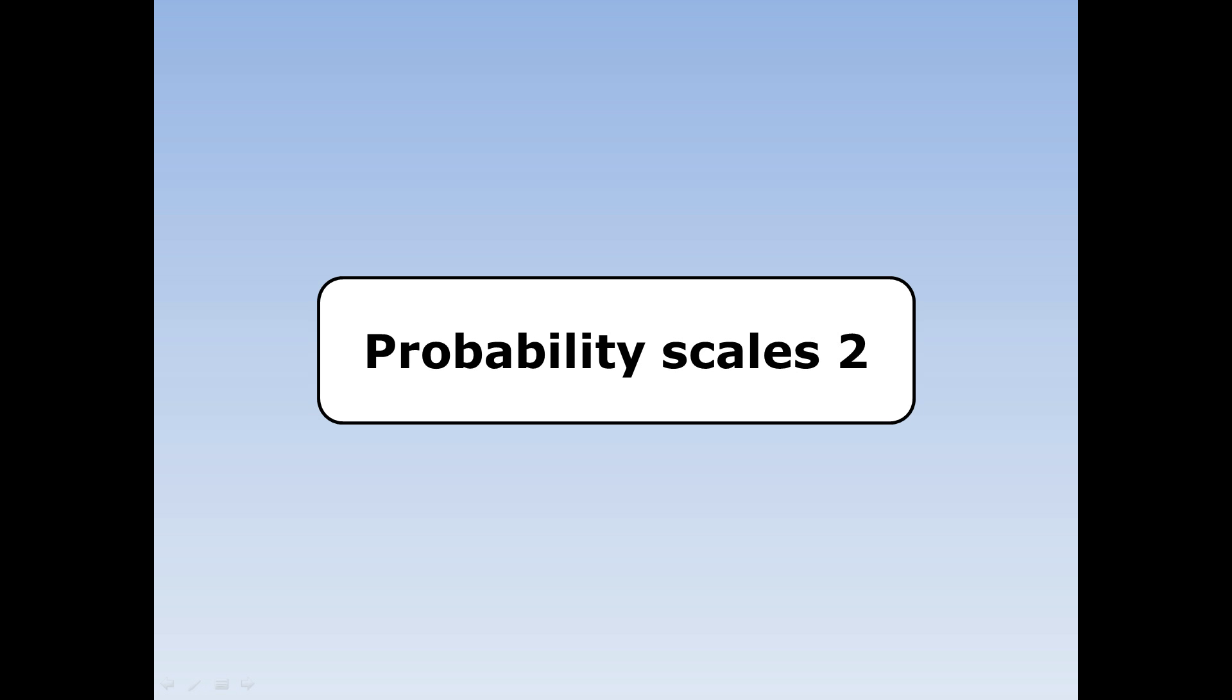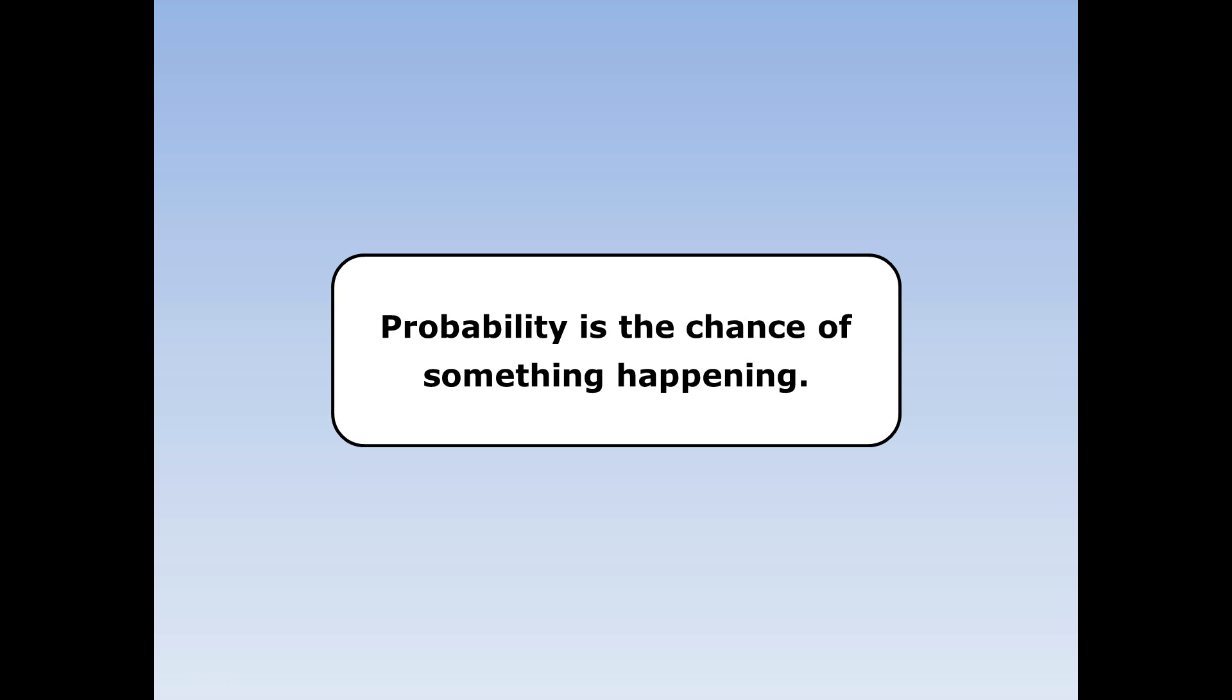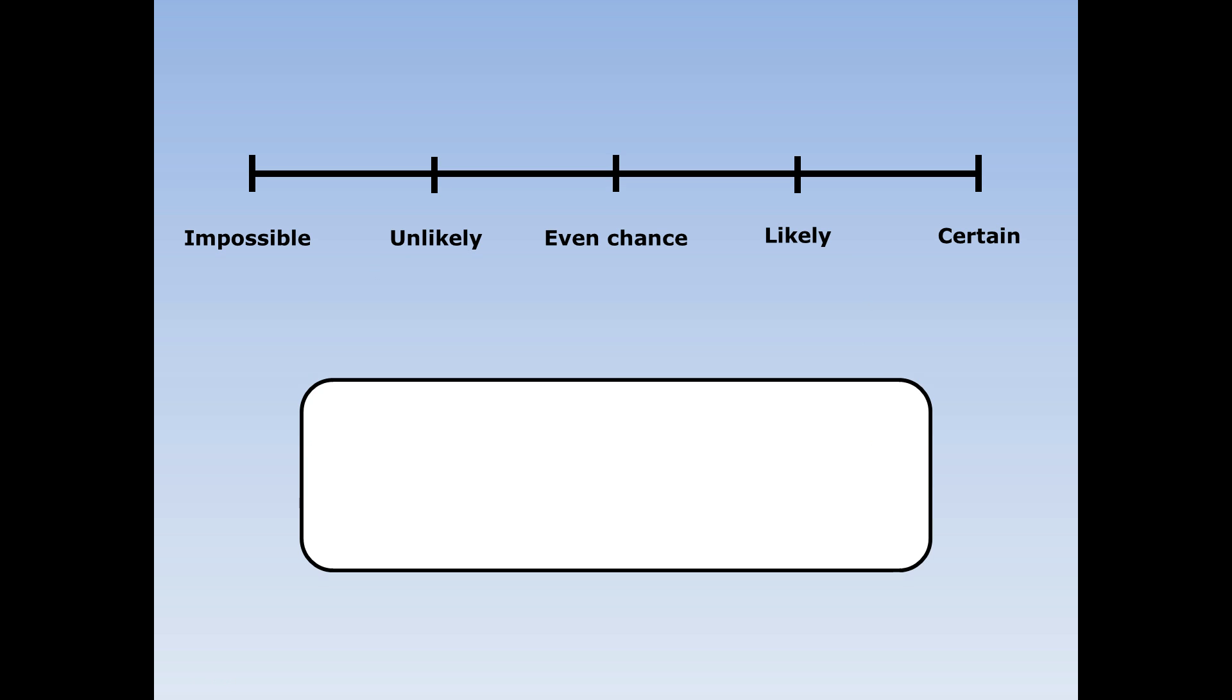Probability scale is 2. Probability is a chance of something happening. Here we have a probability scale with 5 things on it.